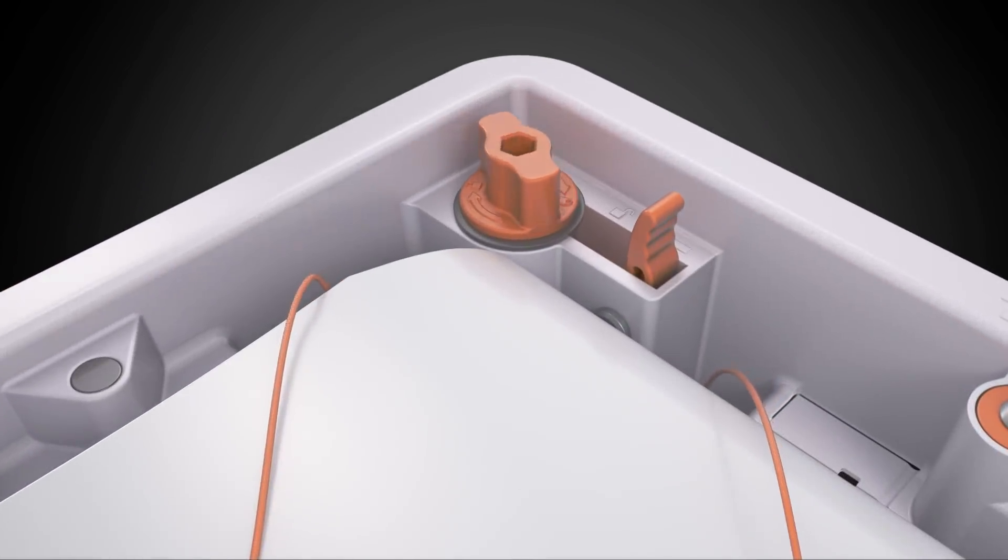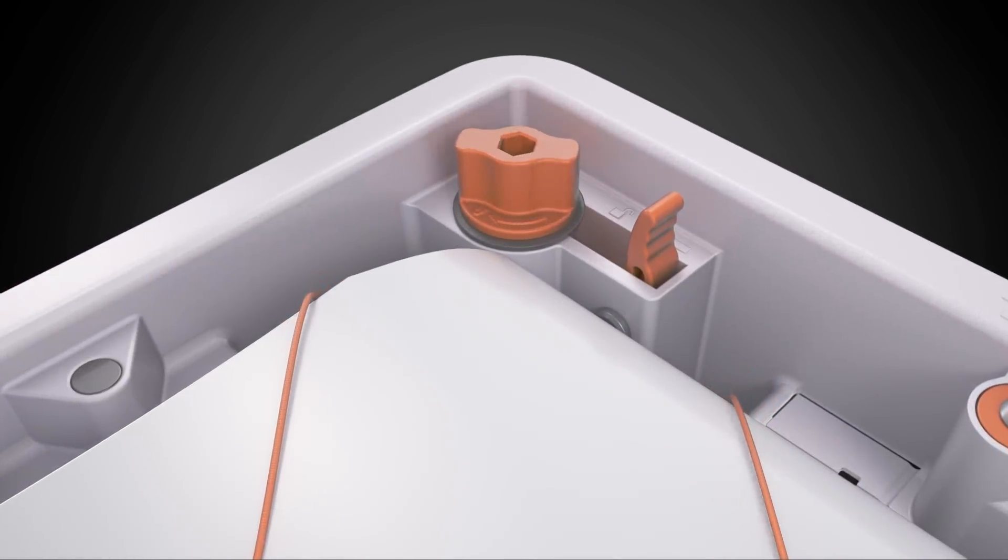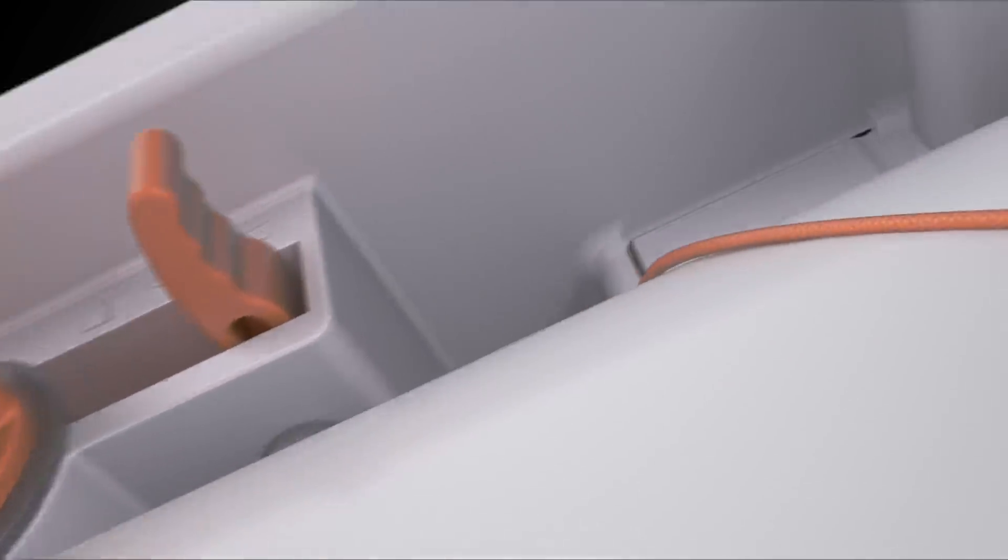Once the AP is behind the cords, simply turn the ratcheting knob to tighten the cords around the AP, fastening it securely in place.